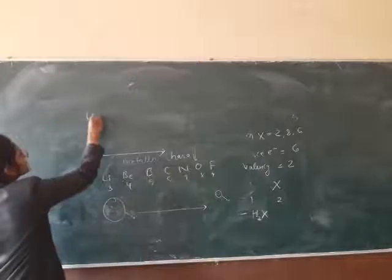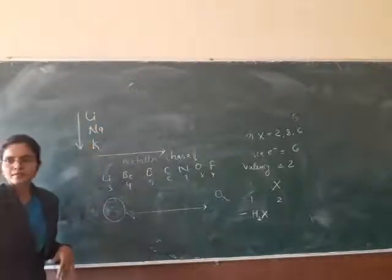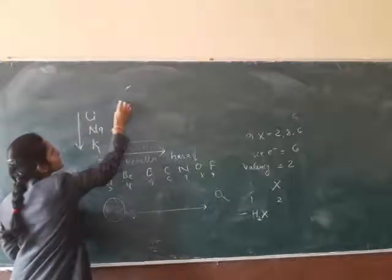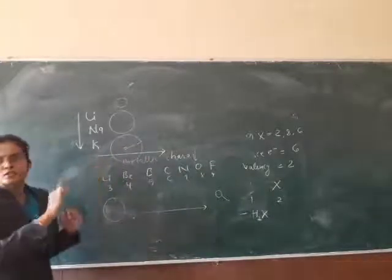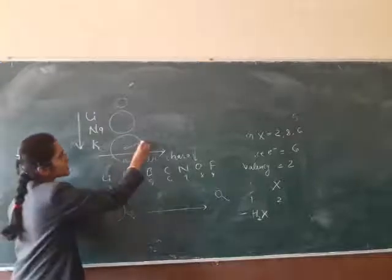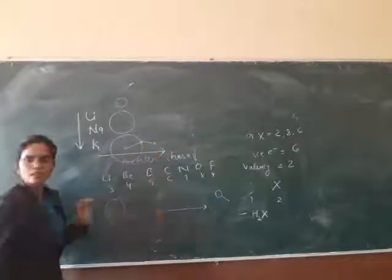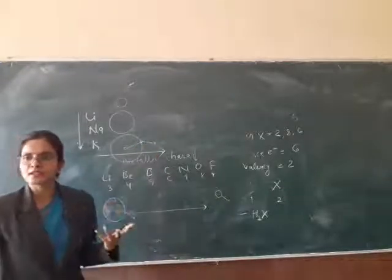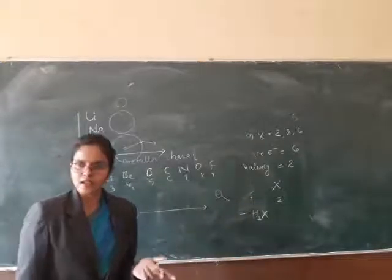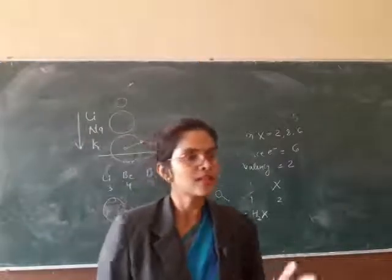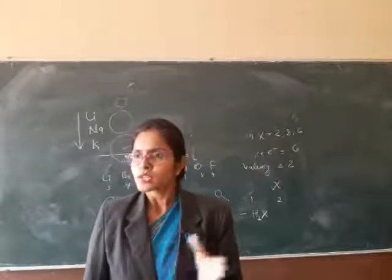Down a group — like Li, Na, K in group 1 — size increases as we go down. The distance from the outermost shell to the nucleus increases, so the effective nuclear charge experienced by valence electrons decreases. Therefore electrons can be more easily lost, meaning metallic character increases down a group। Include one example in your answer।